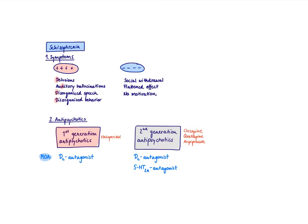Schizophrenia is characterized by so-called positive symptoms and negative symptoms. The positive symptoms include delusions, auditory hallucinations, disorganized speech and disorganized behavior. This can be remembered by the four D's.